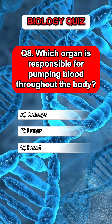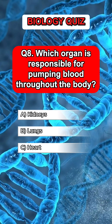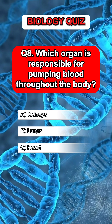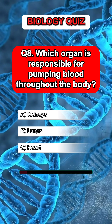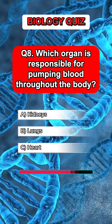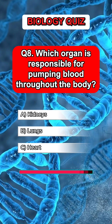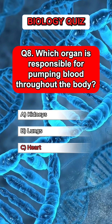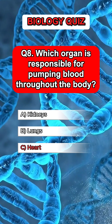Question 8. Which organ is responsible for pumping blood throughout the body? Answer C. Heart.